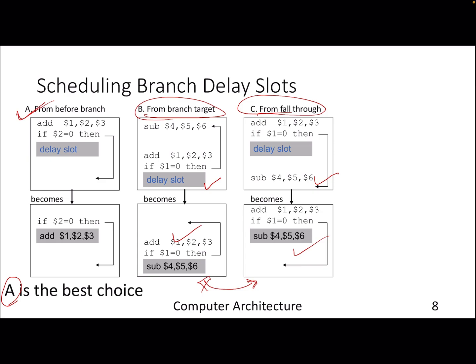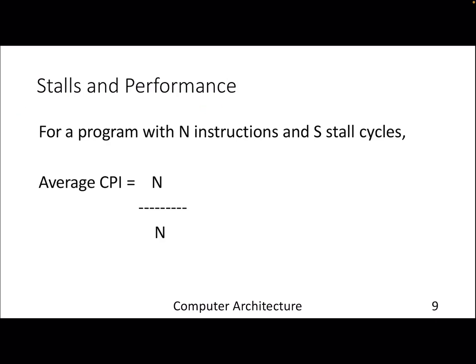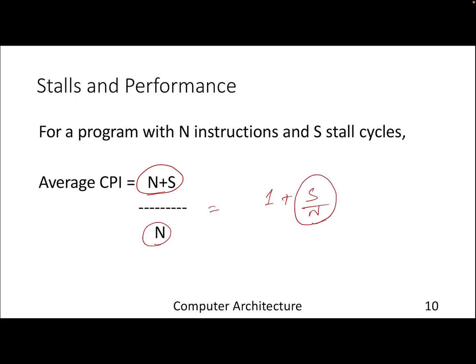With the notion of different stalls discussed, the average CPI — cycles per instruction — is now being affected. Previously we had an average CPI of one, meaning every clock cycle we pump out one instruction. But now we have introduced S stall cycles, which can be due to data hazards or control hazards. These S extra cycles are added to the cycle count while the number of instructions remains the same, becoming an additional delay component in the average CPI. This means CPI will now be greater than one, which is not a good thing.